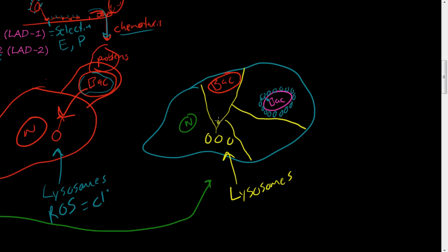Inside the cell there's a cytoskeleton with little tracks that help give the cell its 3D shape. Lysosomes are picked up by little molecules — like trucks — that travel along these tracks to fuse with and attach to the engulfed bacteria. So lysosomes are carried by transport molecules along the cytoskeleton structures to reach the bacteria and fuse with it.